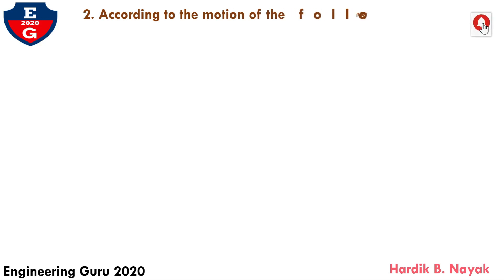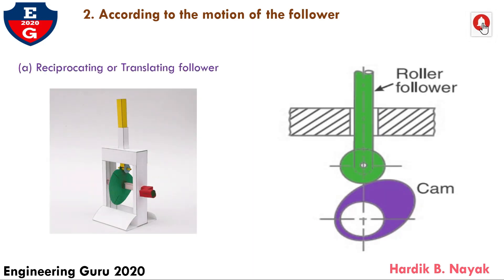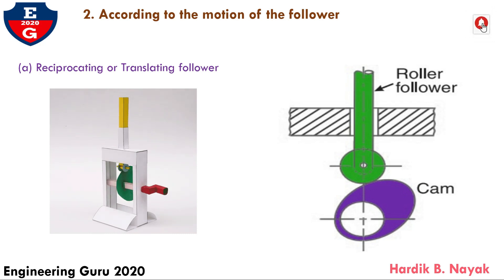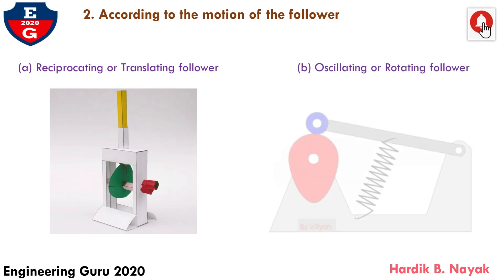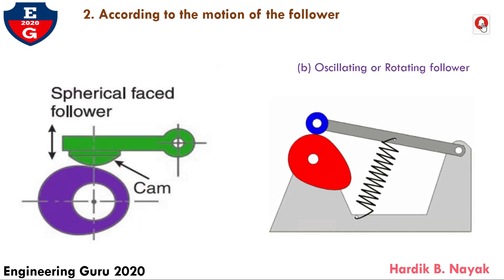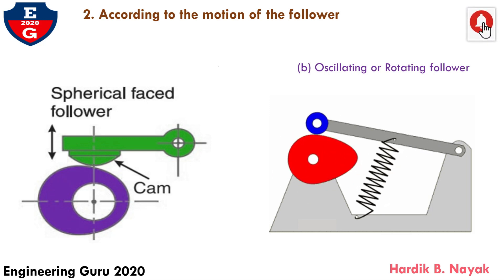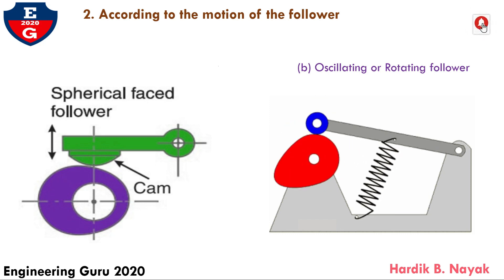Now, second type — according to the motion of the follower — are of the following two types. First is reciprocating or translating follower: when the follower reciprocates in guides as the cam rotates uniformly, it is known as reciprocating or translating follower. Second is oscillating or rotating follower: when the uniform rotary motion of the cam is converted into predetermined oscillatory motion of the follower, it is called oscillating or rotating follower.